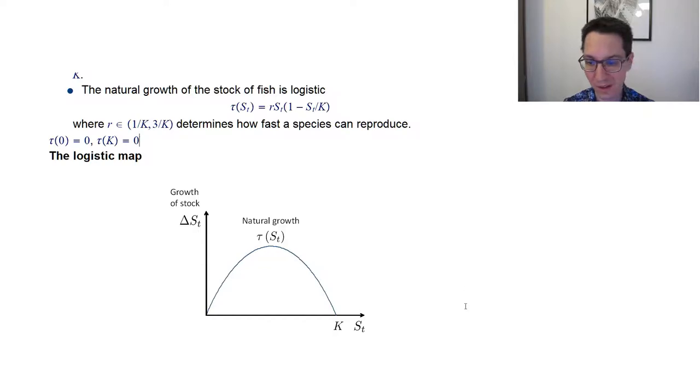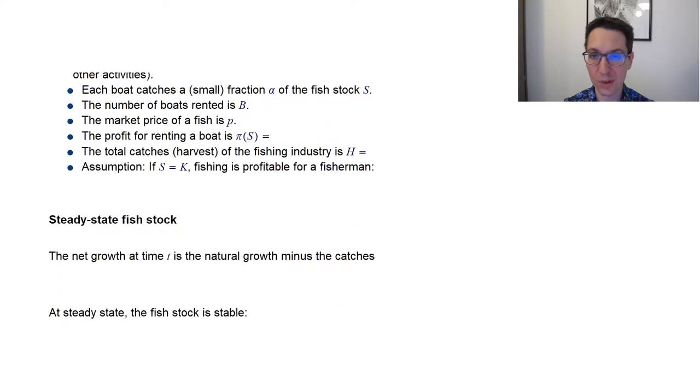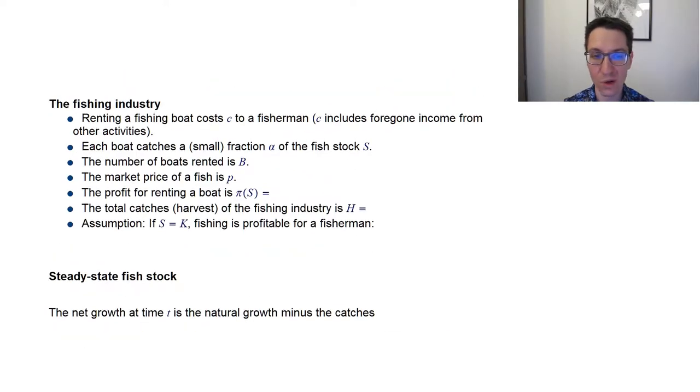So this is the fish population. Now let's go to the fish industry. Let's make a bunch of assumptions. So first of all, let's say it costs C to rent for a fisherman or a fisherwoman to rent a boat. And here C includes all foregone income from other activities. So it's really an opportunity cost.